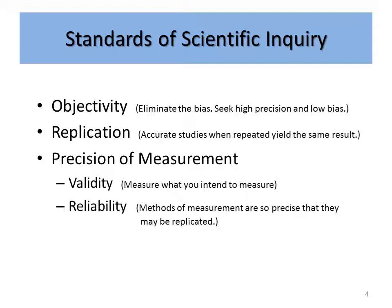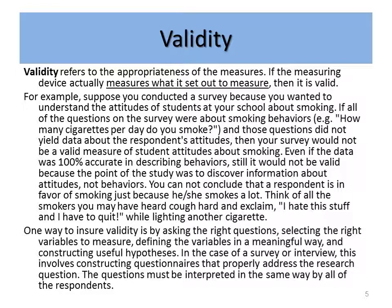Validity means that you measure what you intend to measure. Validity refers to the appropriateness of the measures — if the measuring device actually measures what it is set out to measure, then it is valid. For example, suppose you conducted a survey and wanted to understand the attitudes of students at your school about smoking. If all the questions were about smoking behaviors, such as how many cigarettes per day did you smoke, and those questions did not yield data about the respondent's attitudes, then your survey would not be valid — it would not be a valid measure of student attitudes about smoking. Even if the data was 100% accurate in describing behaviors, it would still not be valid because the point of the study was to discover information about attitudes, not behaviors.